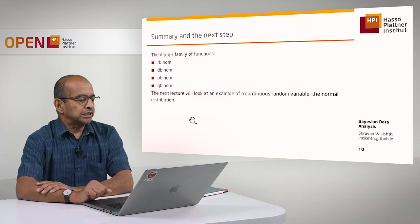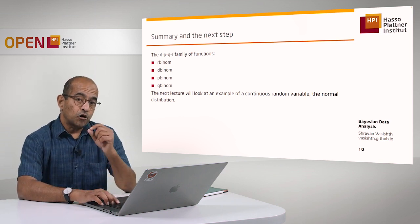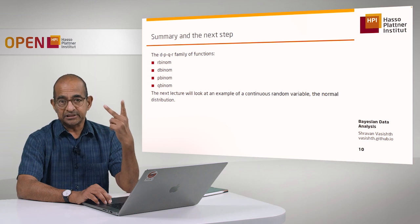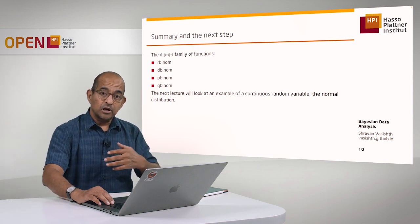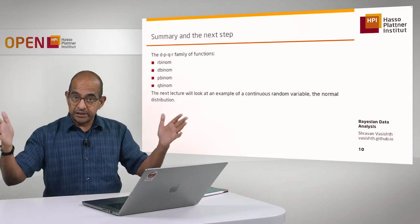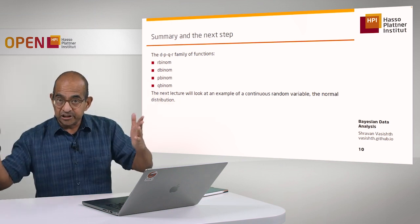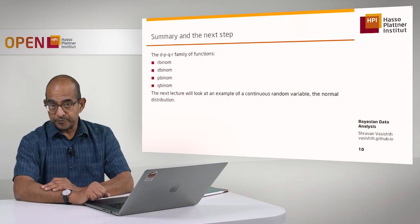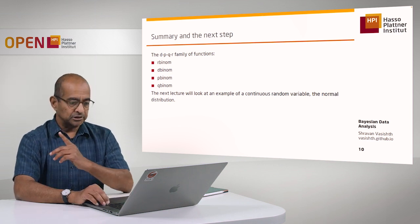What we're going to do next is look at an example of a continuous random variable. Until now we've looked at two discrete random variables: the Bernoulli and the binomial. Now we'll look at a more complex situation where the support of X is continuous values on the real number line — there are no discrete steps, and there can be an infinity of possible values. That's called a continuous random variable, and I'll discuss the canonical example: the normal distribution.